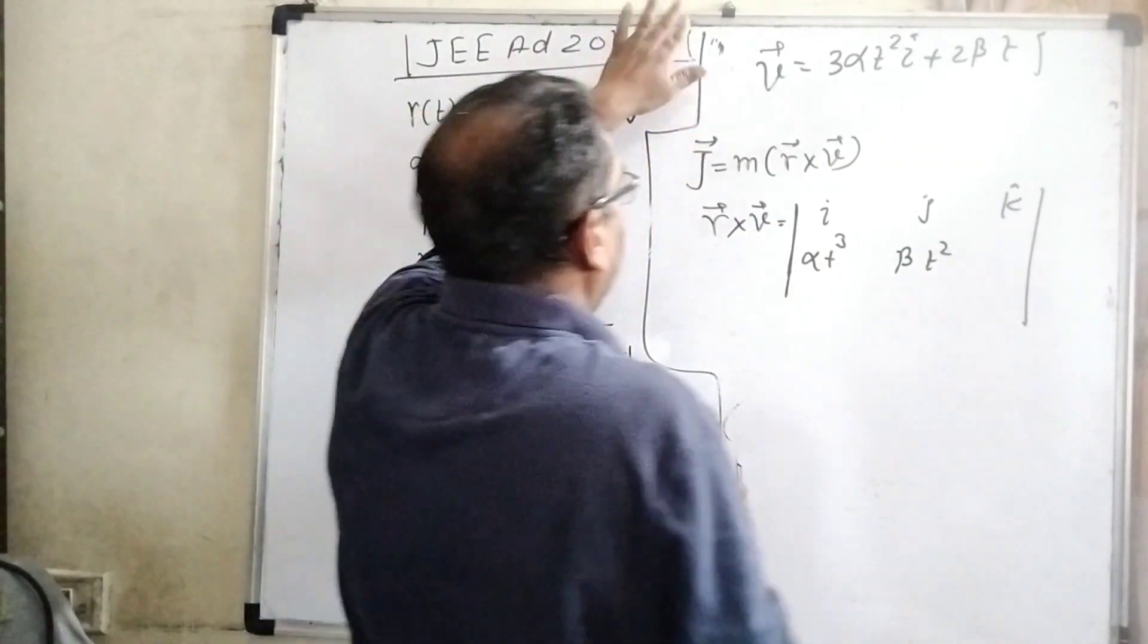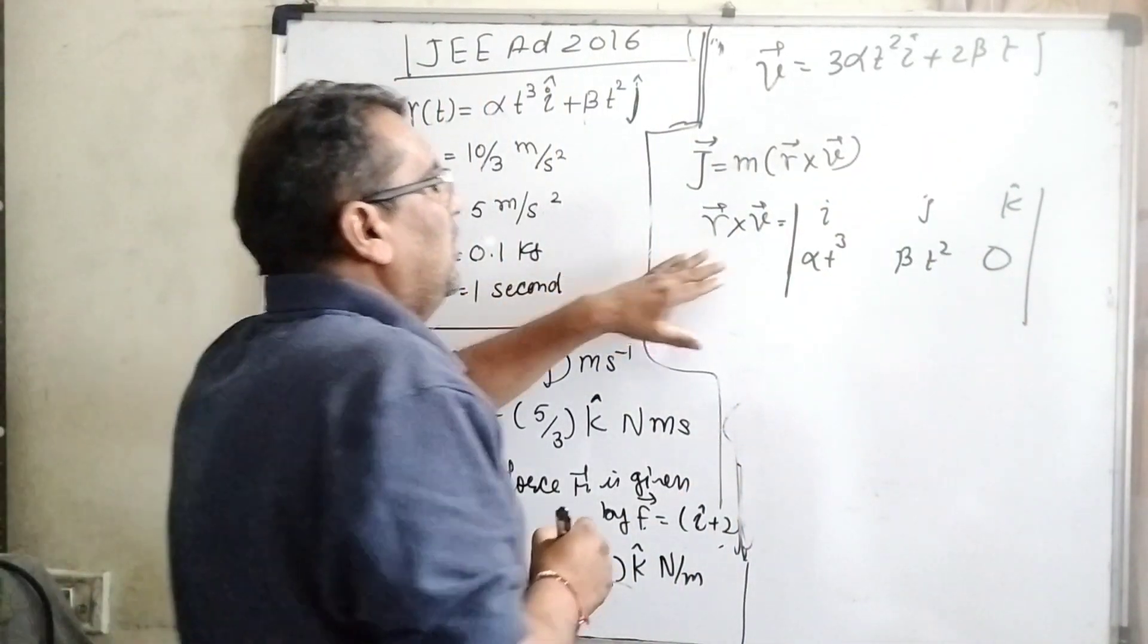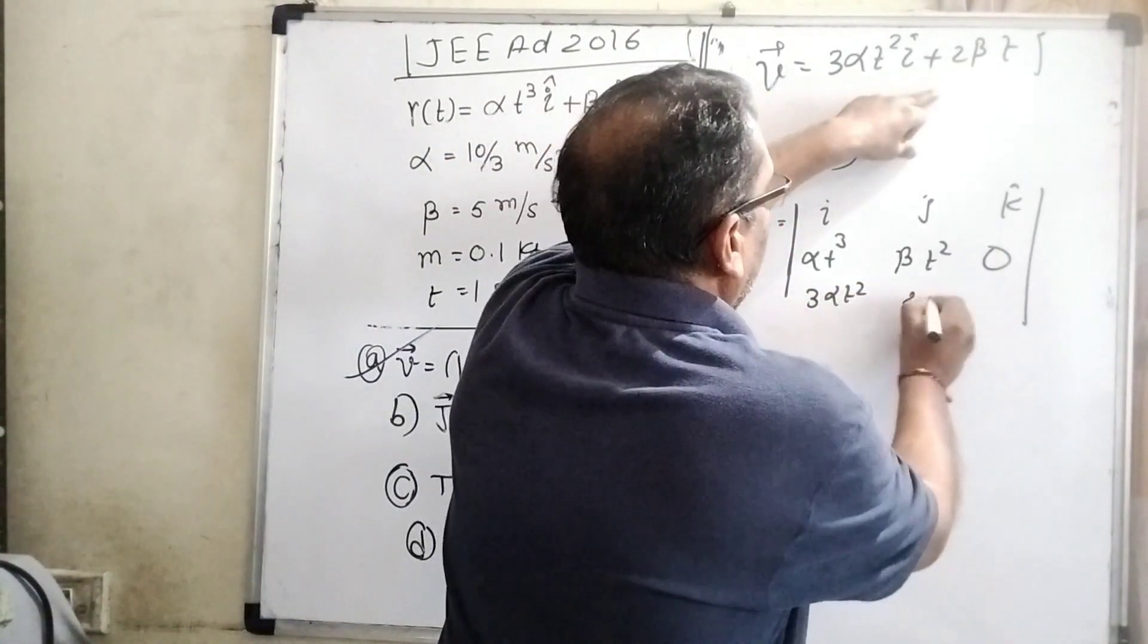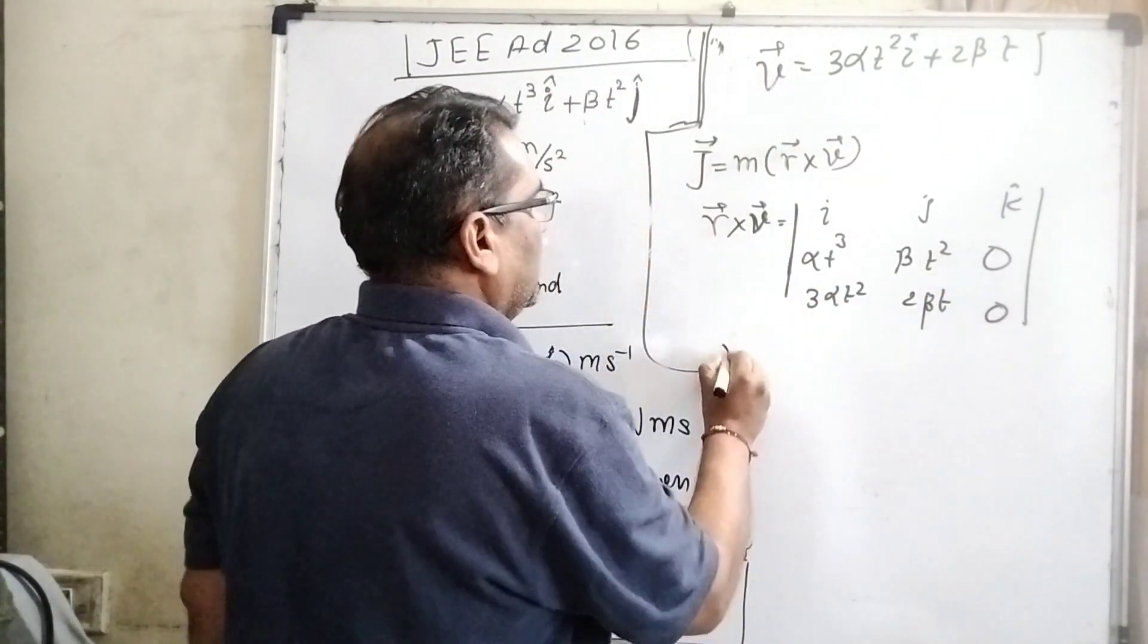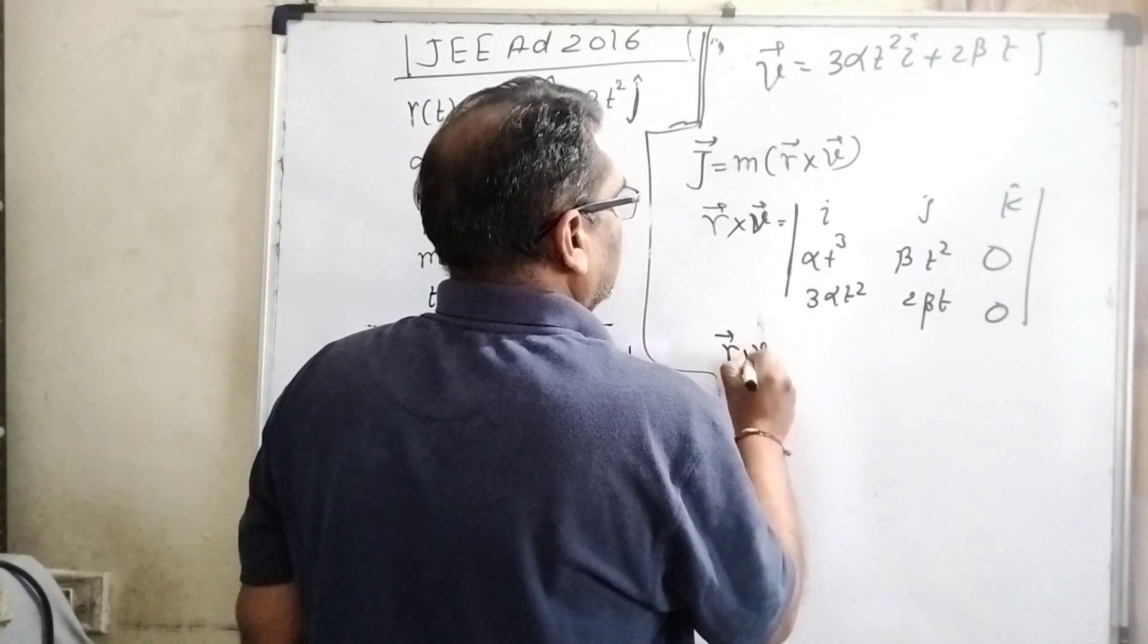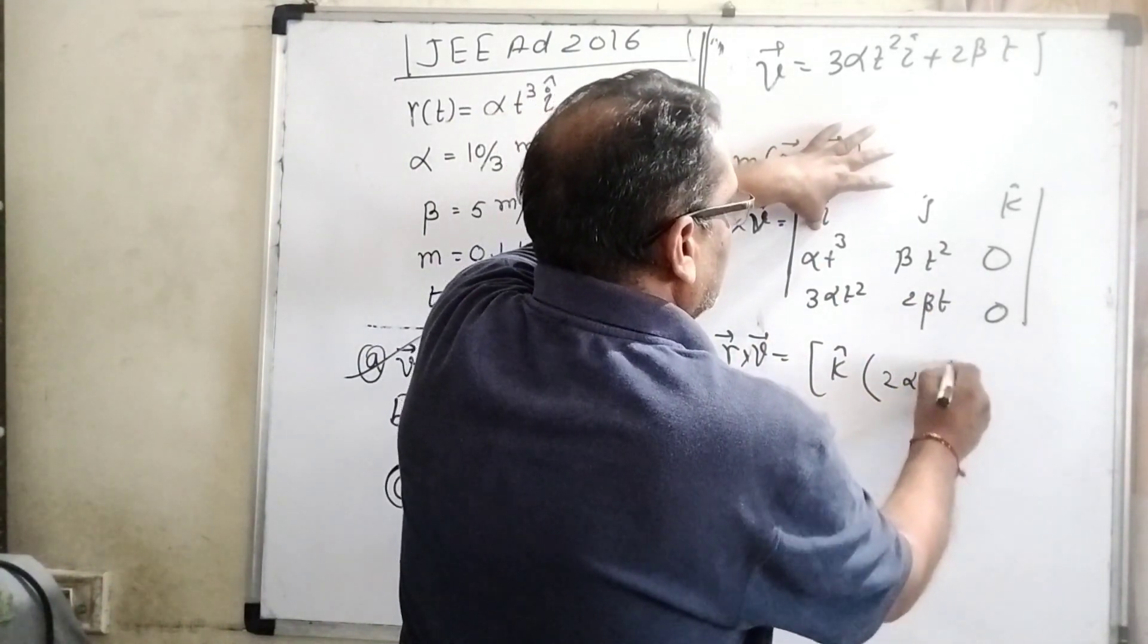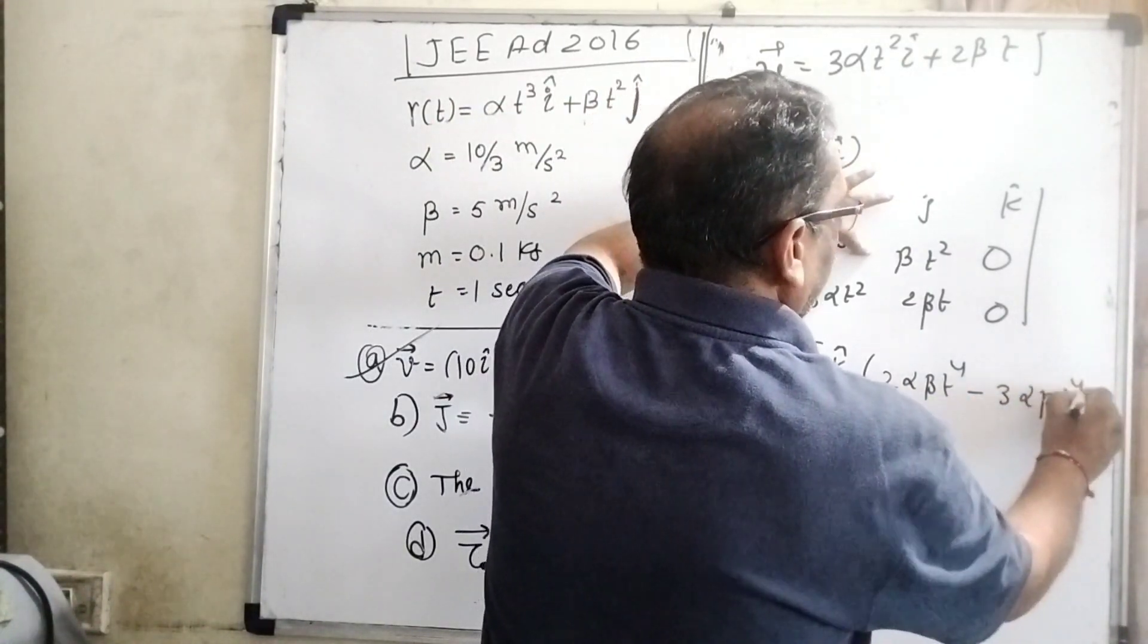You know the determinants method: i, j, k. What is the coefficient of i in position vector? α t³. Coefficient of j vector is β t². Coefficient of k: there is no k coefficient, so we put 0. Same things: coefficient of i for v vector is 3α t², 2β t, and coefficient of k is 0. Then r cross v vector equals k: 2αβ t⁴ minus 3αβ t⁴.